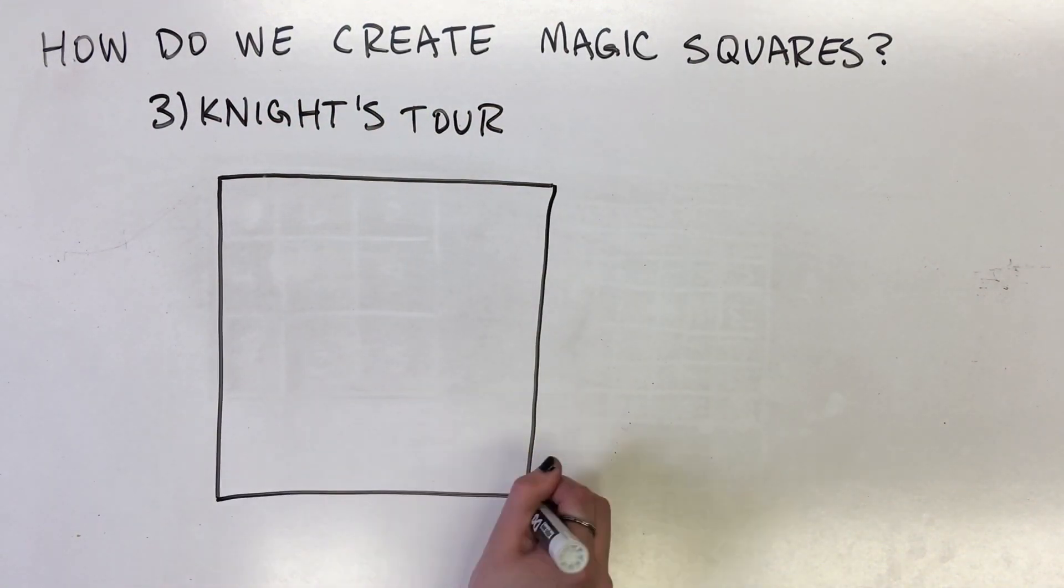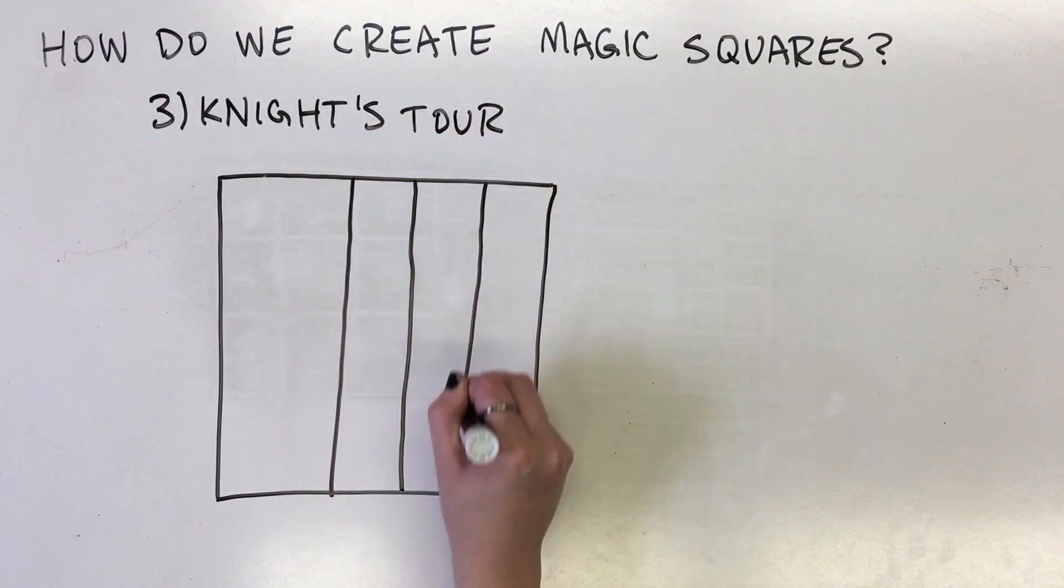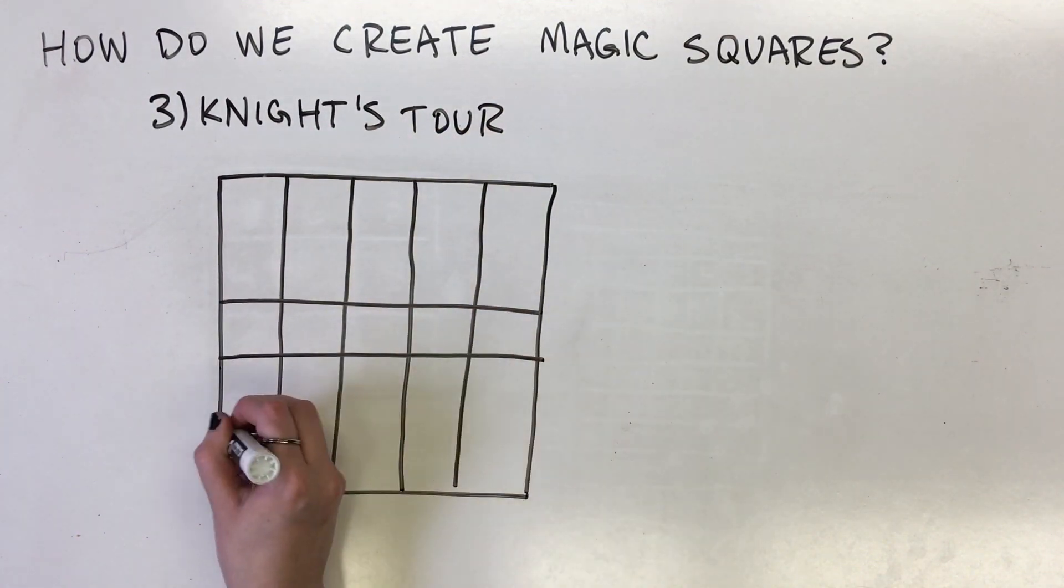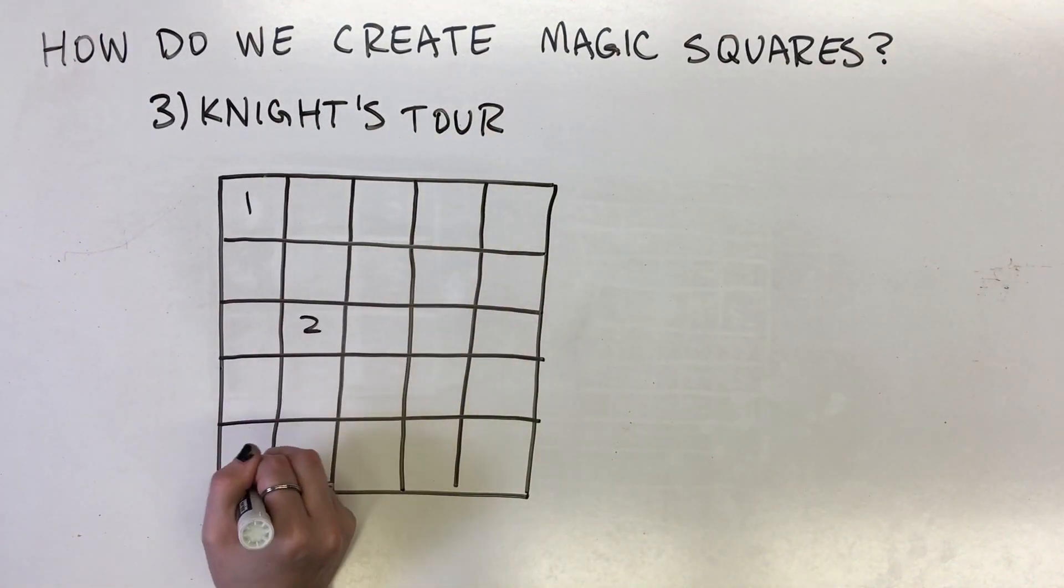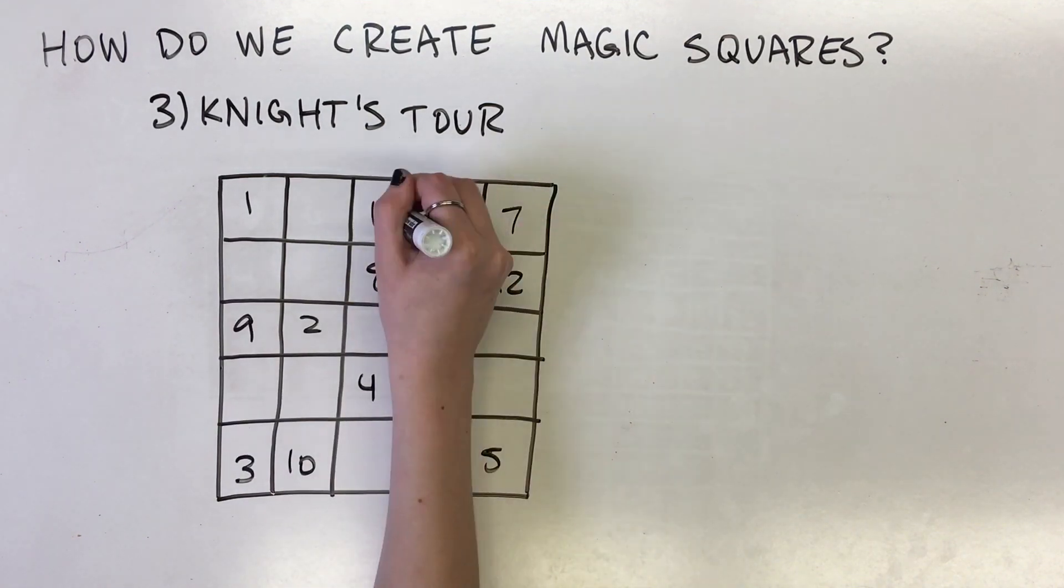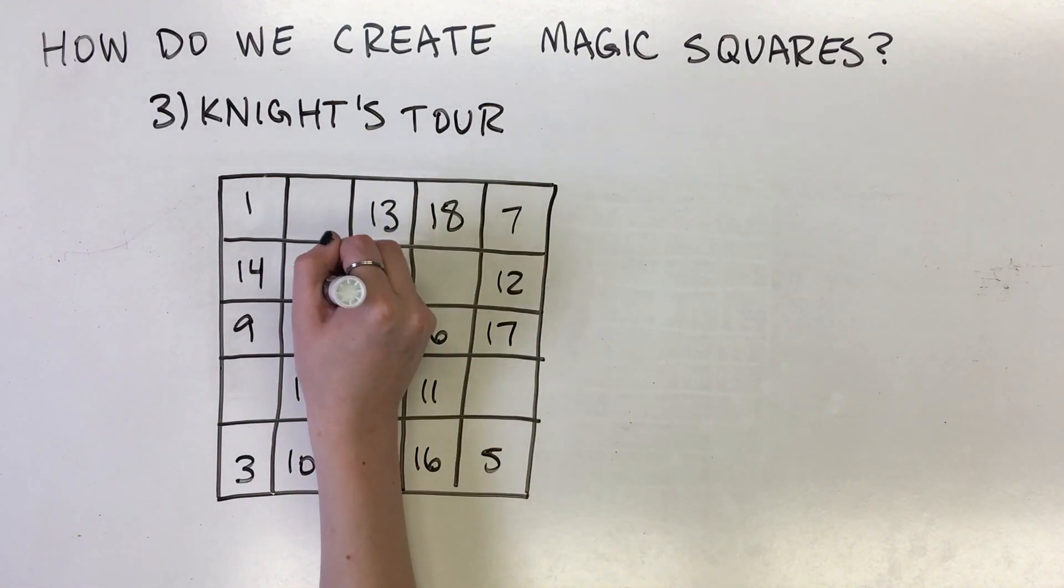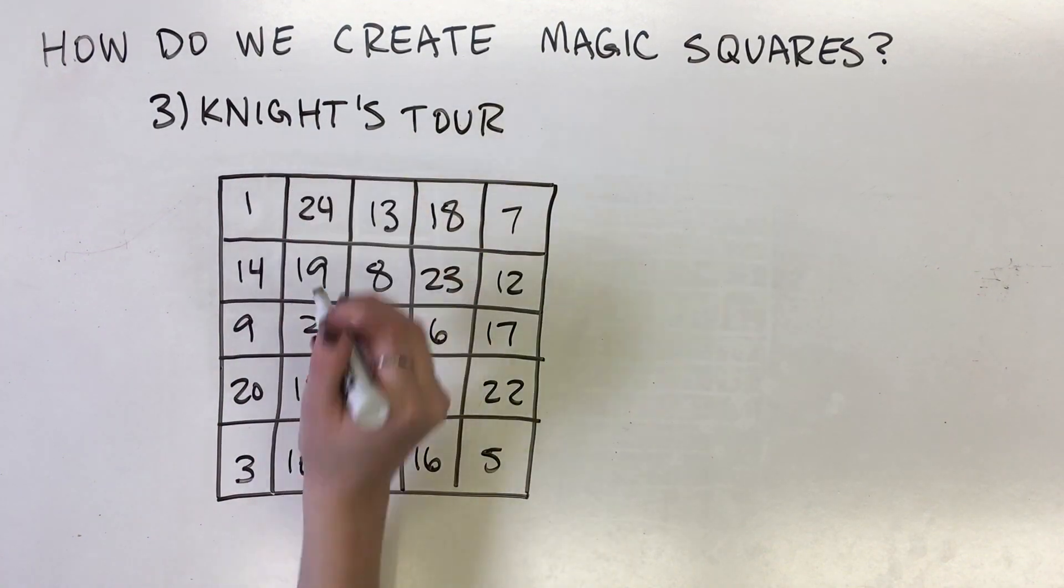Consider the following problem. What if we numbered the cells with the numbers 1 through n² in the order that the knight traveled through them? Such a path is called a diagonally magic tour, as the diagonals also add up to the magic constant.